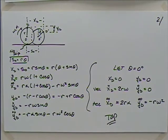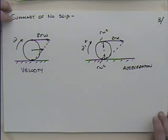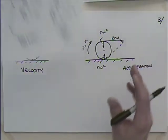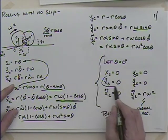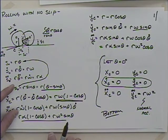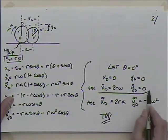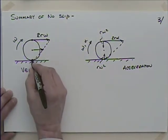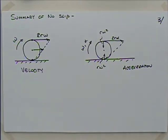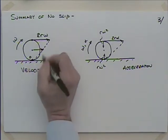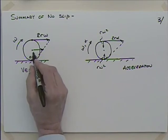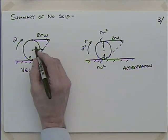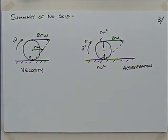We could keep doing this for more points, but by doing the bottom and the top we can make the extension to the whole wheel. Looking at velocity: at the bottom it's zero, at the top it's 2R*omega in the X direction. If I did the center, you can see it's a linear relationship - R*omega at the center. Zero at bottom, R*omega at center, 2R*omega at top.